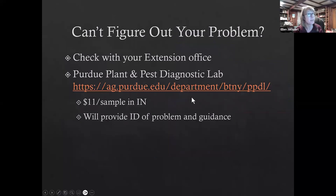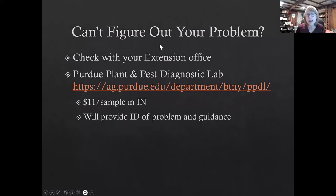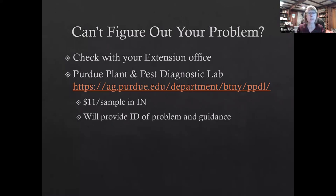Know your problem and what kind of impacts it's going to have. If you can't figure it out, check with your extension office — that's always a really good first place to go for identification. If they can't help, the Purdue Plant and Pest Diagnostic Lab (PPDL) is one of the great resources in this state for people who grow plants. You can send them a sample and for $11 they will tell you what the problem is and give advice on how to deal with it.